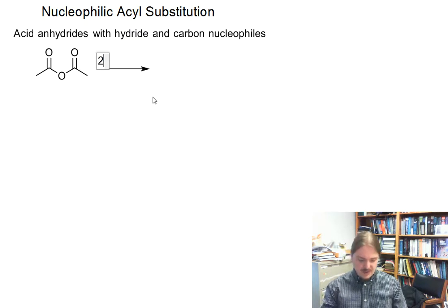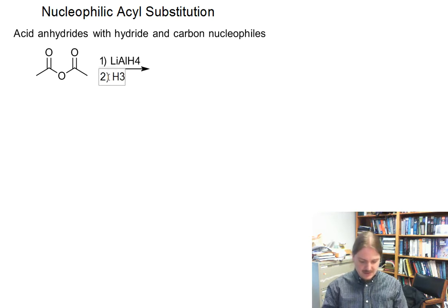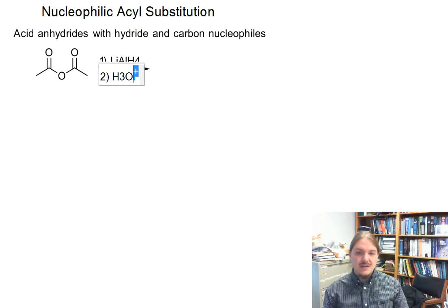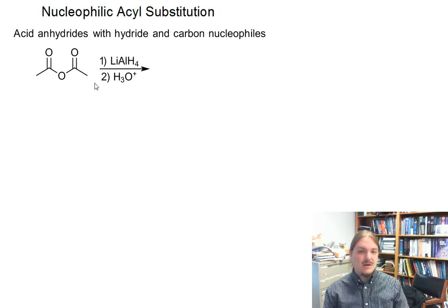Let's start off with a hydride reducing agent, lithium aluminum hydride. Lithium aluminum hydride is the superpower of reducing agents. It reduces just about all carbonyl compounds to the corresponding alcohol. And so lithium aluminum hydride actually reduces both carbonyl groups in an anhydride through the corresponding alcohol.